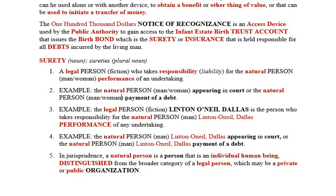We have to know the distinction. For example, the natural person man Linton-O'Neill Dallas appearing in court, or the natural person man Linton-O'Neill Dallas making payment of a debt. This surety — this all-cap sophisticated financial instrument — should secure all debt. That is the debtor; that's the surety. Two separate and distinct entities. A natural person is a person that is an individual human being, distinguished from the broader category of a legal person, which may be a private or public organization, usually registered.